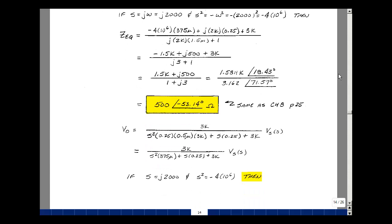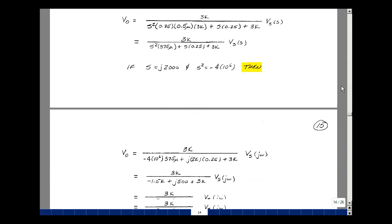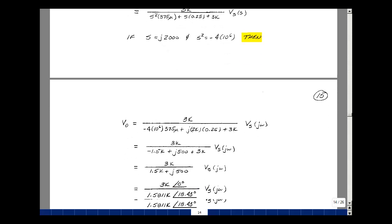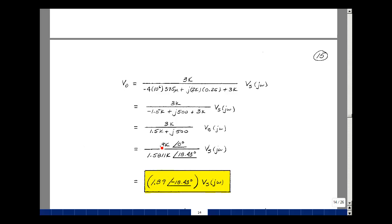Likewise, let's evaluate our expression for V out. We had R, which is 3k, divided by SLCR. So 0.25, 5 micro, and 3k. And S times L, plus 0.25, then 3k. This is 375 micro, again 0.25 and 3k. Evaluating that expression, we'll put in for J squared, minus 4 times 10 to the sixth, and for S, just J2000. Cleaning up, this equals negative 1.5k, J500, then 3k, and 3k in the numerator. We have the same denominator we had before.